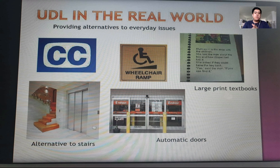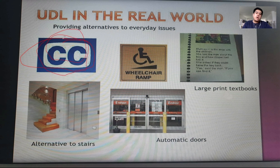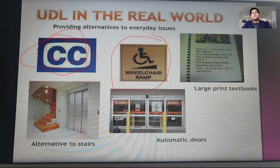UDL in real-world situations provides alternatives to everyday learning experiences. For example, closed captioning — whenever you're watching Korean dramas or foreign films, subtitles help you understand the language. Another example is the wheelchair ramp found in public parks, malls, and other public places — a provision for persons with disabilities.